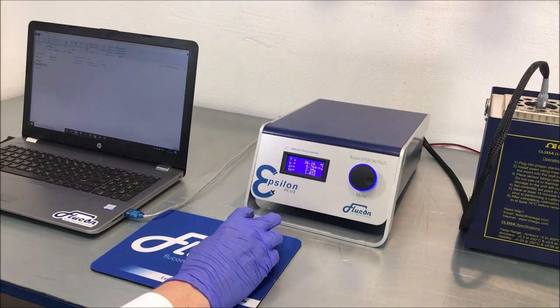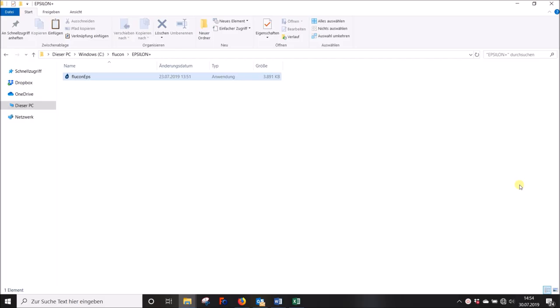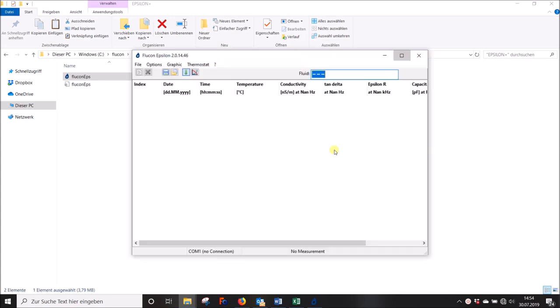Make sure that you copied your Epsilon Plus program to a directory with full administrative access. Now click on the program icon to start the software. This error message will only appear upon initial start of your program.